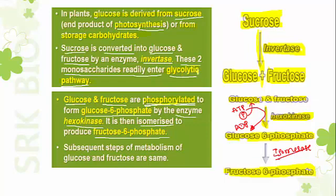Sucrose is broken down into one molecule of glucose and one molecule of fructose, both entering the glycolytic pathway via invertase. Glucose is converted into glucose-6-phosphate with addition of inorganic phosphate from ATP. Then glucose-6-phosphate is converted into fructose-6-phosphate with the help of the enzyme isomerase.